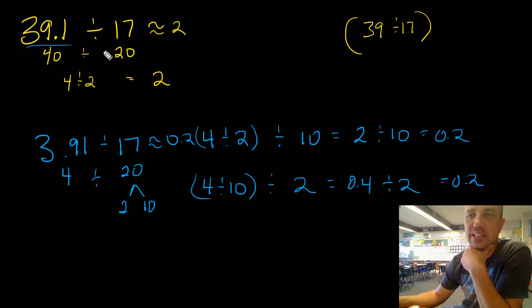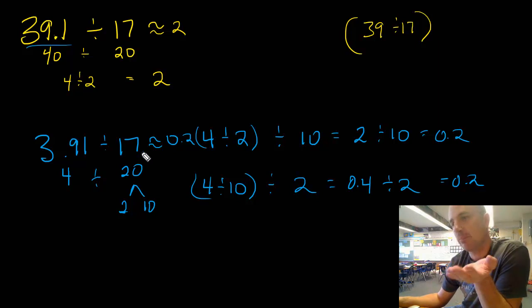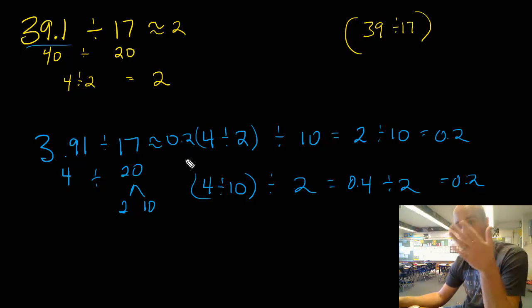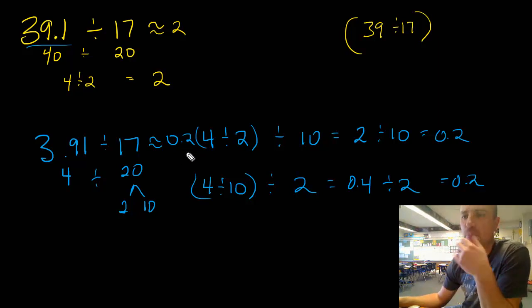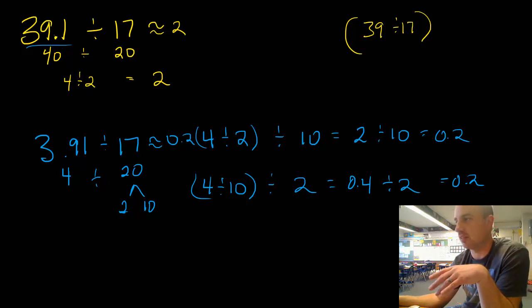Always ask yourself if the answer makes sense. Up here it was easy to visualize 2 going into 39. Down here it's harder, but if you count by 2 tenths — 0.2, 0.4, 0.6 ... up 17 times — you'd get to about 3 and 91 hundredths. So the answer is reasonable within the context of this problem.